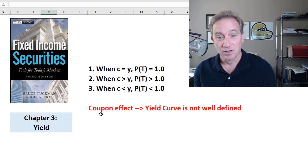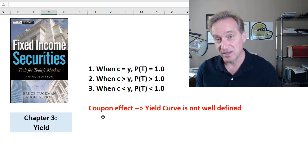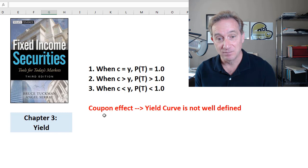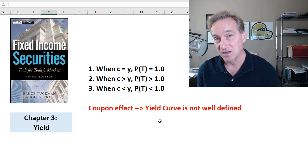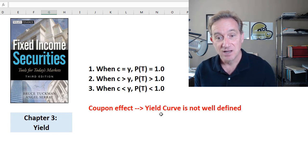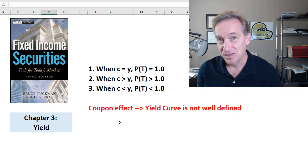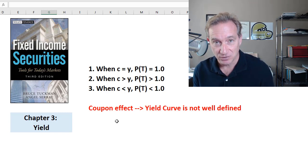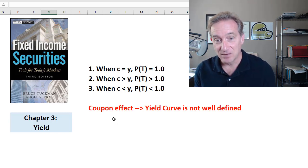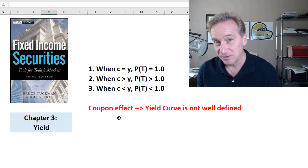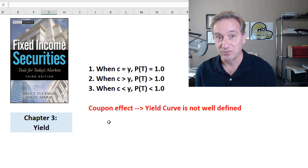Secondly, we'll look at something that's a little more subtle but profound, and that is when we say, what's the yield curve, we've not been specific enough. The fact that there is a coupon effect means that the yield curve is not well-defined, and what that means is that we can take the same identical term structure of spot rates, and we will get slightly different yield curves for bonds with different coupons. That's the coupon effect.